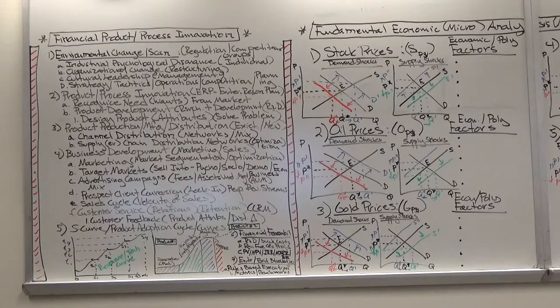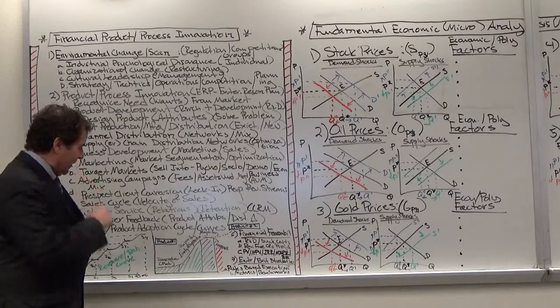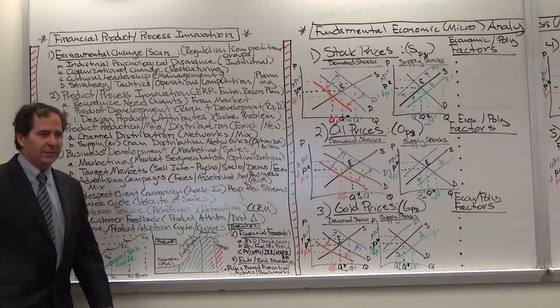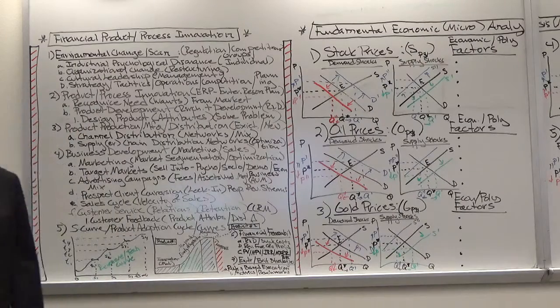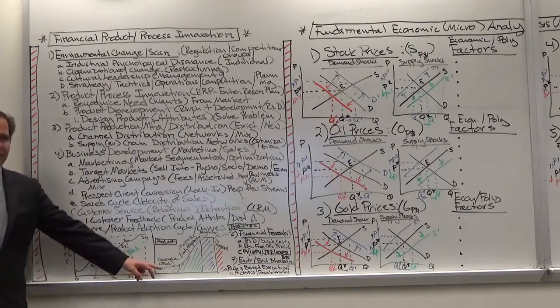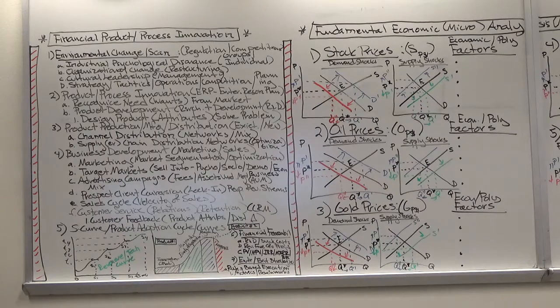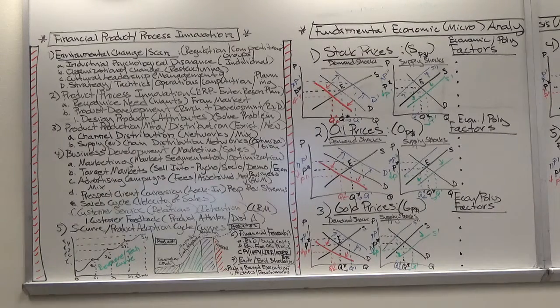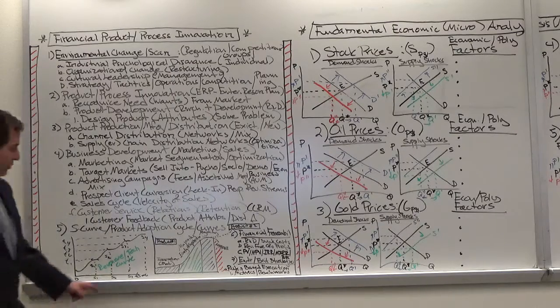The second is the adoption cycle, the product adoption cycle. Now when you're introducing a new product, you're going to go through basically four phases. All products go through four phases of adoption. There's the innovator stage, which is usually flat, could take a long time depending on the type of product. You're trying to build awareness and you're trying to build adoption and scalability to your product.